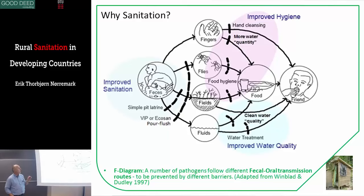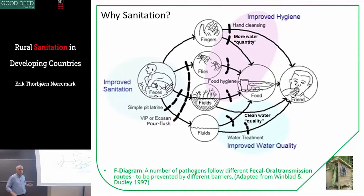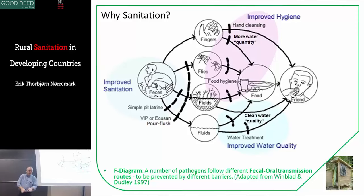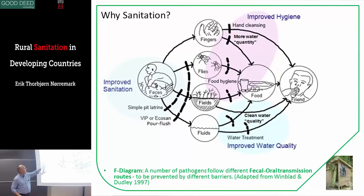In some F-diagrams you see an extra line directly from feces to food. I always said it's not original and shouldn't be there, because my interpretation was that it meant you defecate on your food. But I discovered that it actually refers to using dirty water — for example, river water — for irrigating your crops, where somebody upstream is defecating and you have polluted water going onto your crops. That's effectively the same as somebody defecating on your crops. So if you have an F-diagram with five pathways, it's okay. I will upload a more detailed explanation of how to understand the F-diagram.